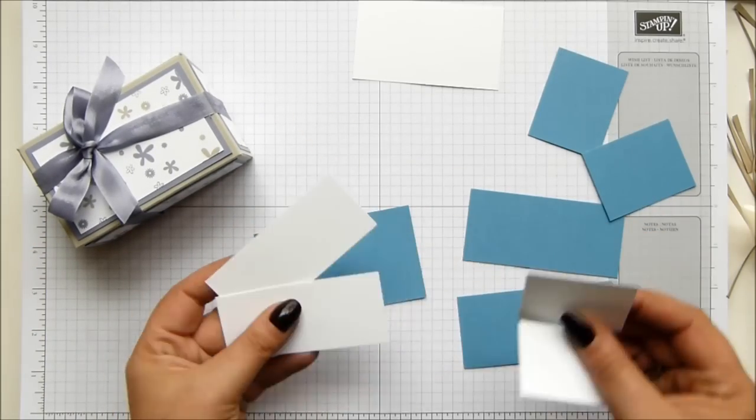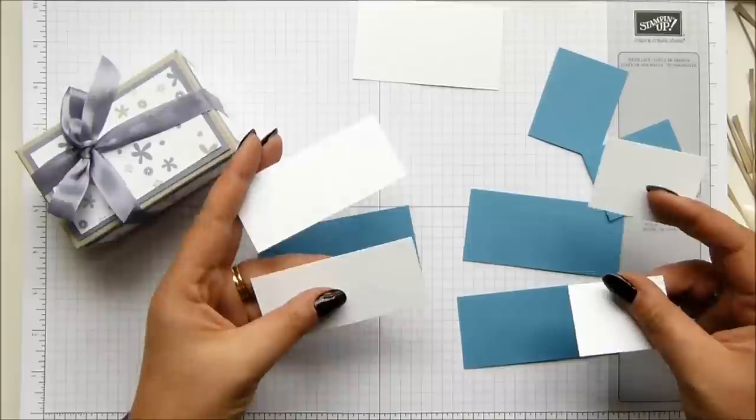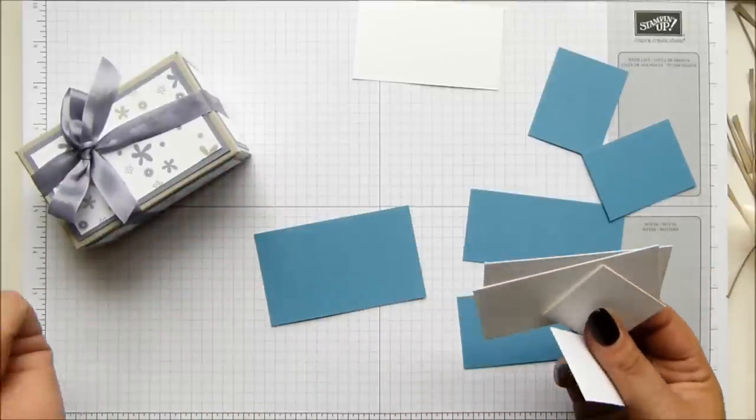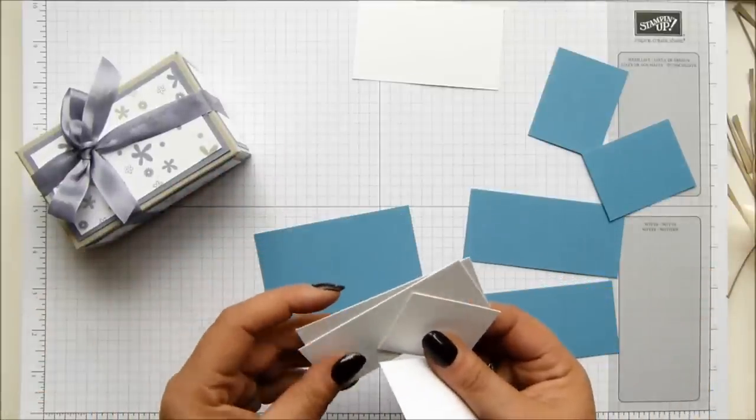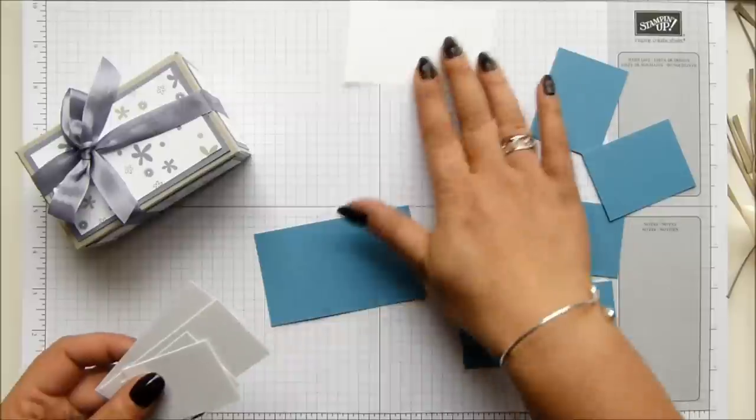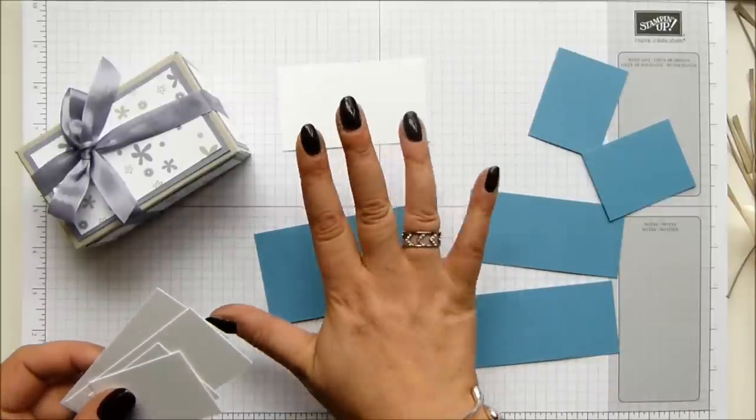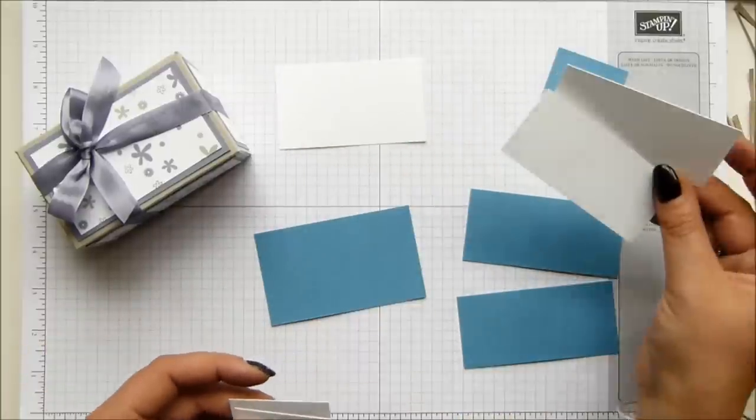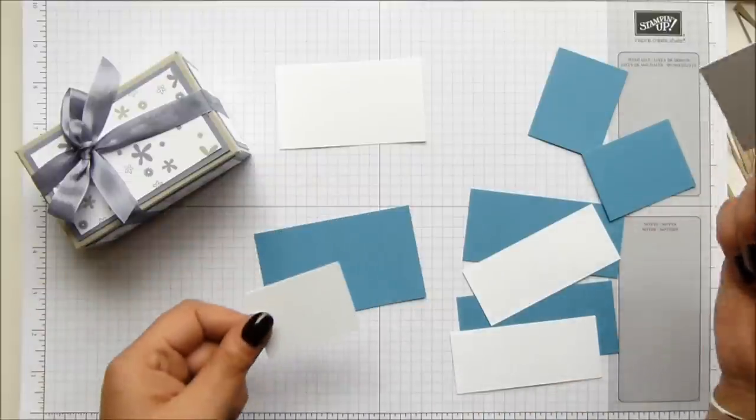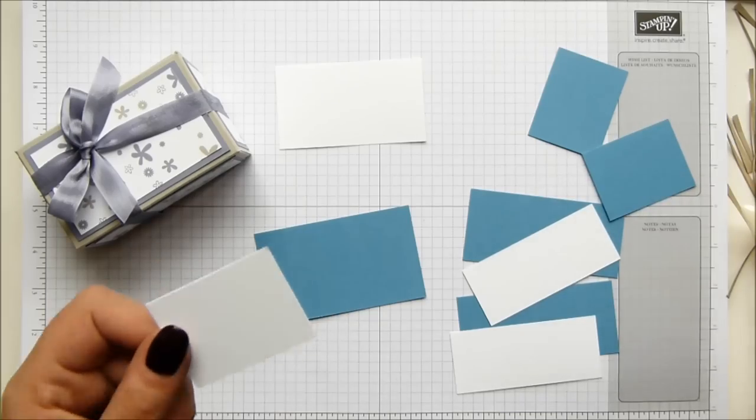And then you need the same number of pieces, but in Whisper White that are basically a quarter of an inch, half a centimeter smaller. So let me go with this. Three and a half by two, so that's nine by five and a half. These two, three and a half by one and a half, nine by four. These two, one and a half by two, four by five and a half.